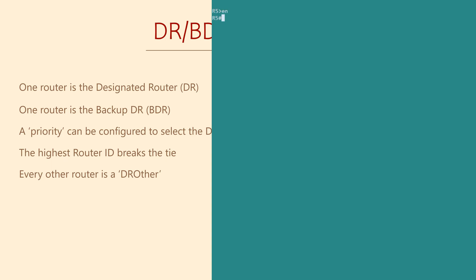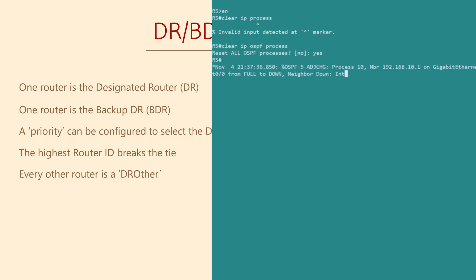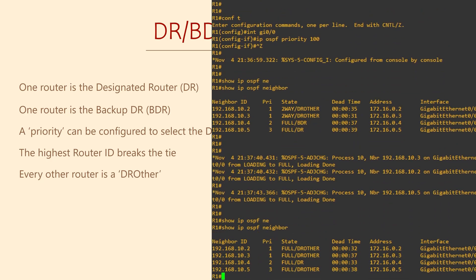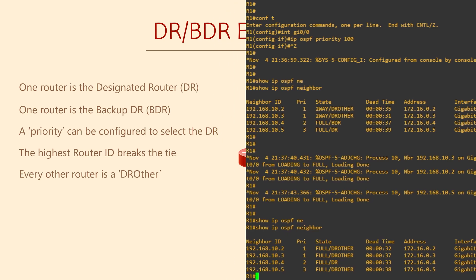Let's head over to R5, which is the current designated router. Here we'll clear the OSPF process, which causes the neighbors to drop and reform. Back on R1, we can look at the neighbors again. We see that R5 — that's 192.168.10.5 — is now a DROther. Router R4 has been promoted from BDR to DR. So even though there's an election process, R1 hasn't become the DR. When the designated router drops out, the BDR gets a promotion, and the routers hold an election to select the new BDR. You'll notice there's no BDR in the list here — that's because R1, the router we're logged into, is now the BDR. For R1 to become the DR, we would need to restart the OSPF process on R4.